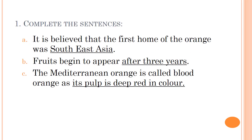First exercise: complete the sentences. A) It is believed that the first home of the orange was southeast Asia. B) Fruits begin to appear after three years. C) The Mediterranean orange is called blood orange as its pulp is deep red in color.